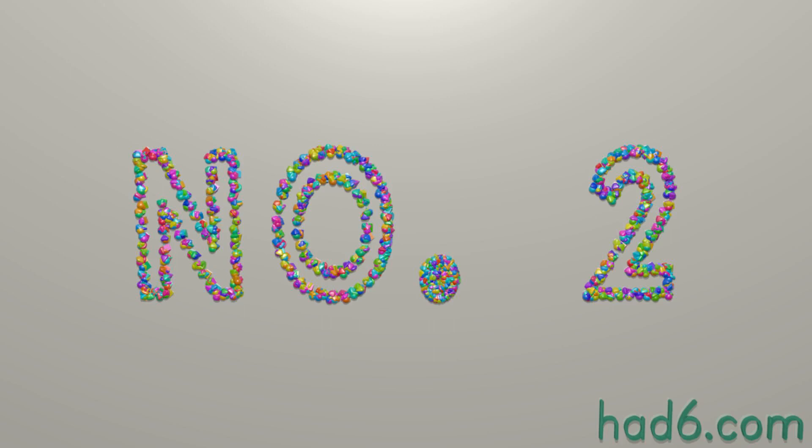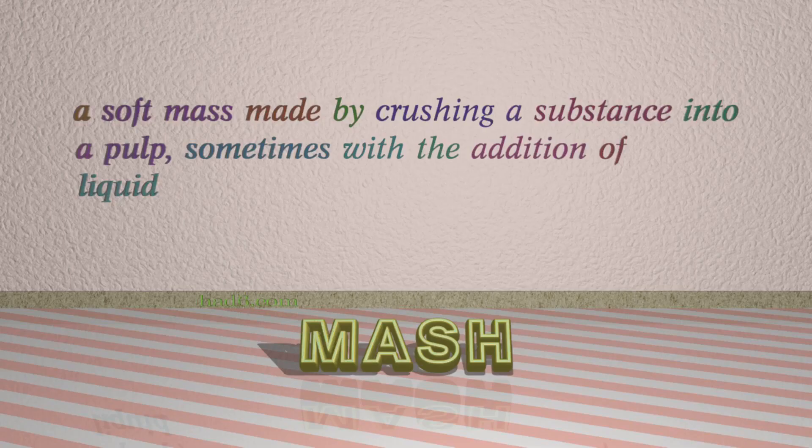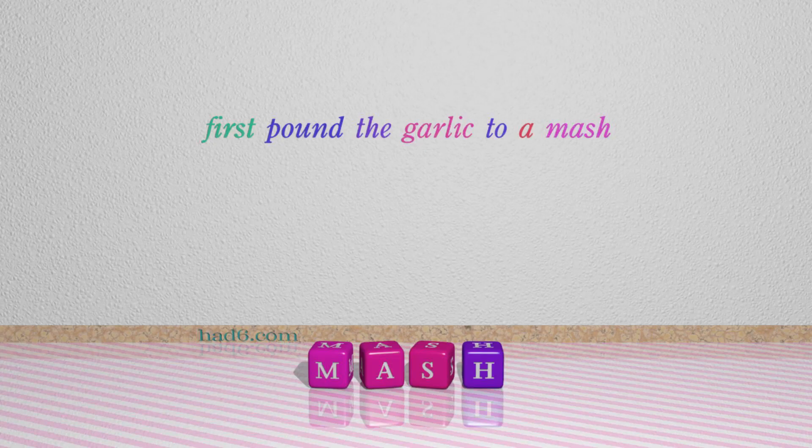Number 2: MASH. Which means a soft mass made by crushing a substance into a pulp, sometimes with the addition of liquid. For example: first pound the garlic to a mash.